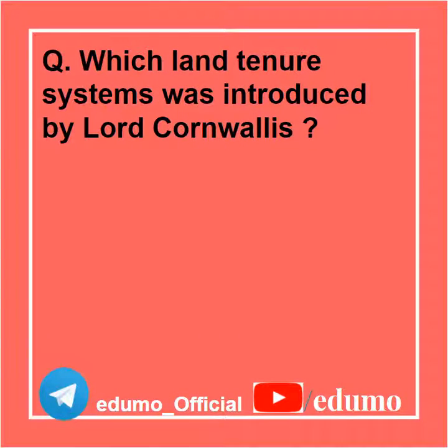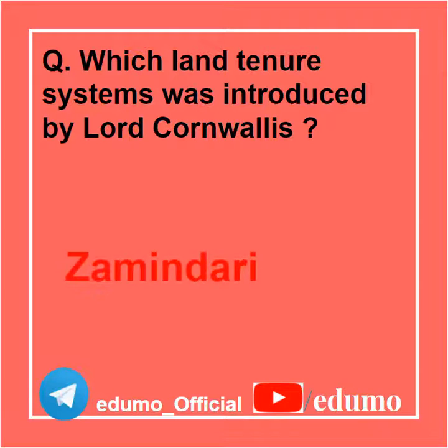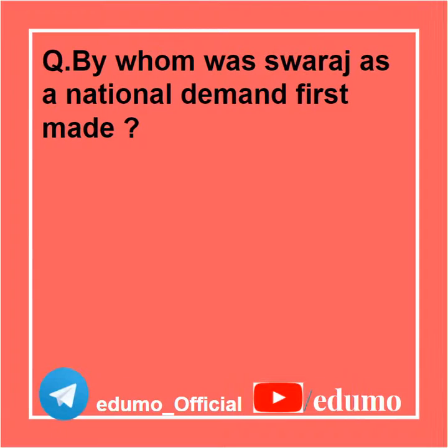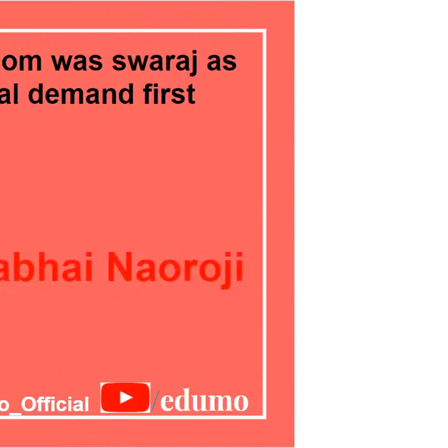Which land tenure system was introduced by Lord Cornwallis? Zameendari system. By whom was Swaraj as a national demand first made? Dada Bhai Naoroji.